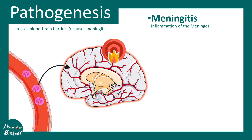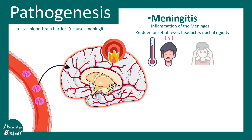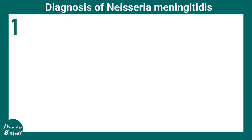They ultimately reach the meninges and cause inflammation — meningitis. Meningitis means inflammation of the meninges, which leads to sudden onset of fever, headache, and nuchal rigidity. There is also photophobia, altered mental status, and nausea or vomiting.